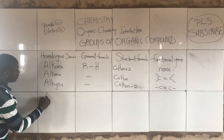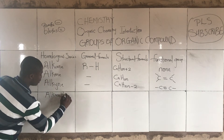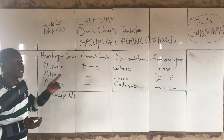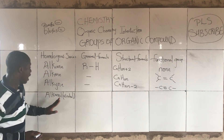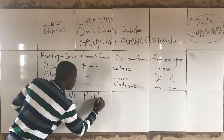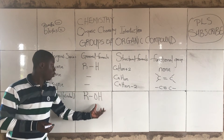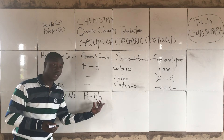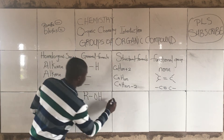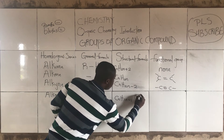The next homologous series is alkanols, which is alcohol. The general formula for alkanols is alkyl-OH. Alcohols are compounds with the OH functional group — the hydroxyl group. You can see the OH functional group here, which denotes hydroxyl.